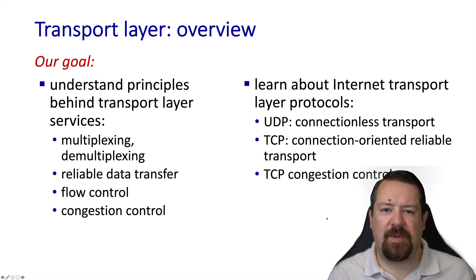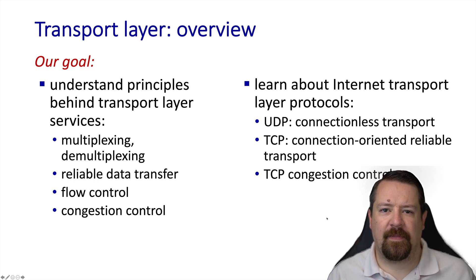TCP is the vast majority of internet traffic. Both protocols handle the issues of multiplexing and demultiplexing between the multiple applications that may be requesting service from the transport layer. On top of this, TCP offers reliability, flow control, and congestion control. We'll be looking at all of these issues in some detail over the course of this chapter.